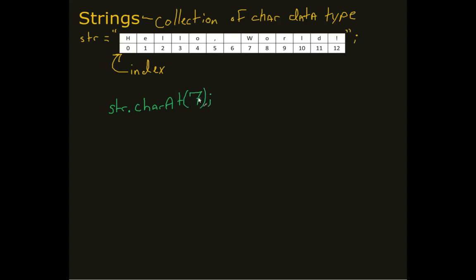Well, what I can do is I can say str.charAt(7). And what that does is it looks at this 7 and it goes, all right, well, what is the value at that index? This is then going to spit out a char data type, W.